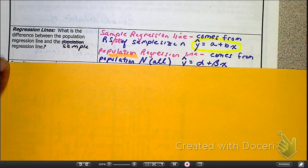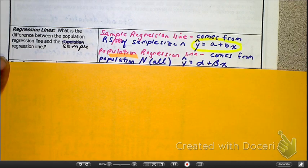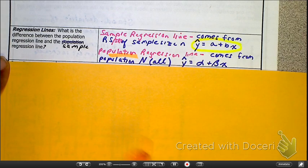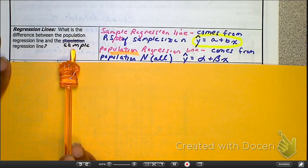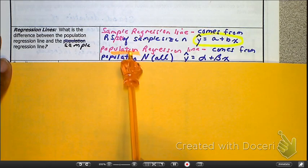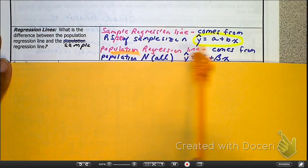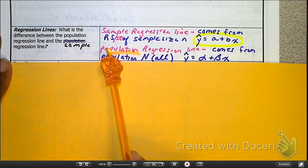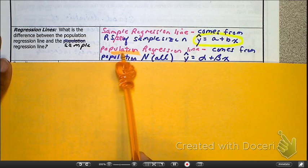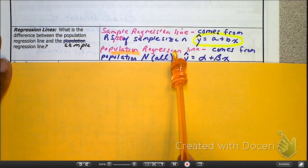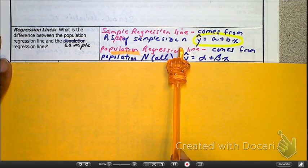First of all, in Chapter 3 we did everything with samples. And now we're looking at our samples compared to that of the entire population. A sample regression line comes from a random sample, or SRS, given sample size n — remember, lowercase n, because it's a sample.